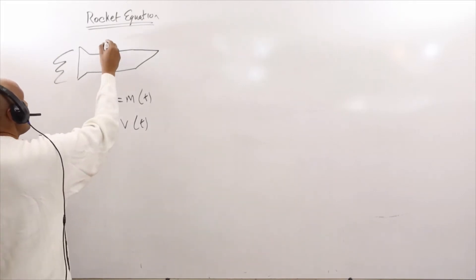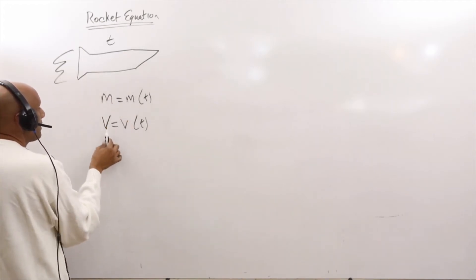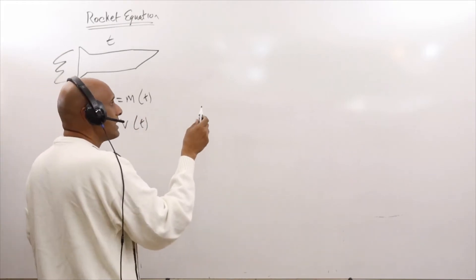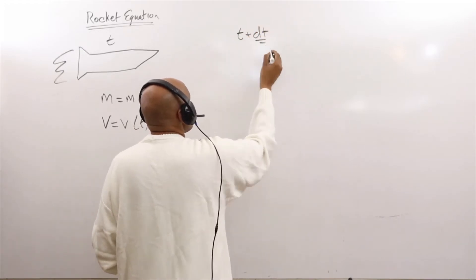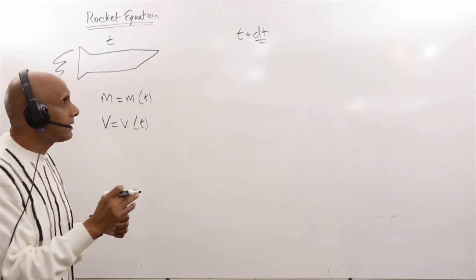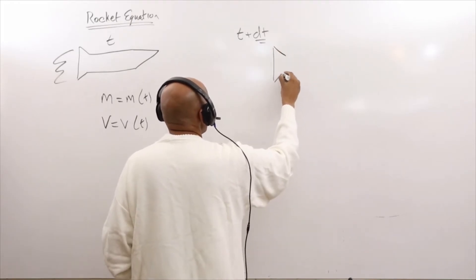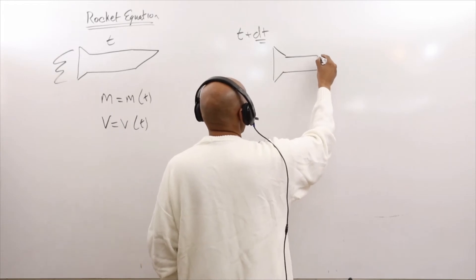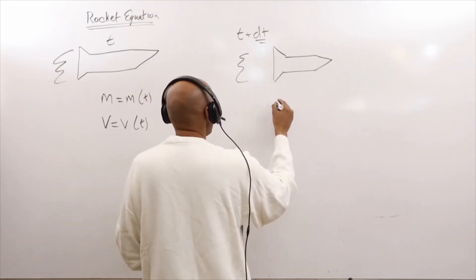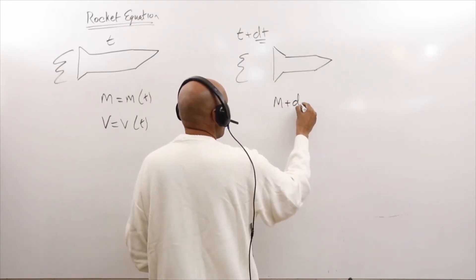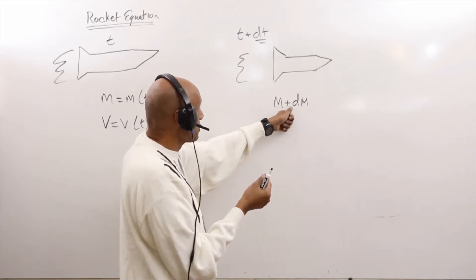Let's assume that at time t, the mass of the rocket is given by m and the velocity is given by v. We then take the rocket at a time instant later, t plus dt — a small differential in time. At that later time, the mass of the rocket is now m plus dm, so there's a differential in the mass. dm is actually negative — we lost some mass — but the mass has changed by dm.